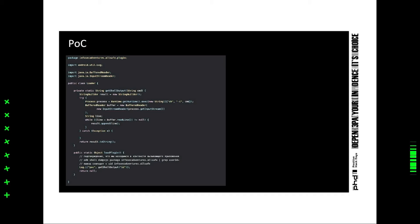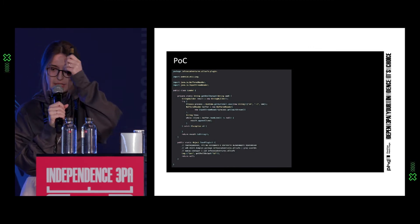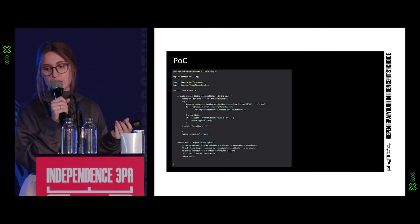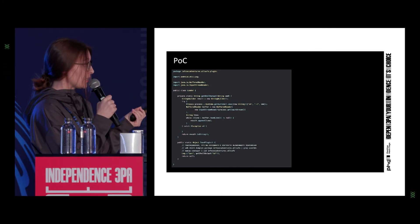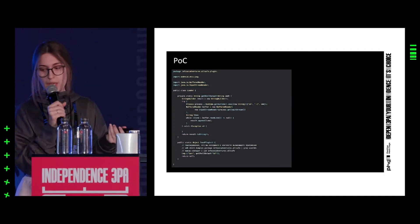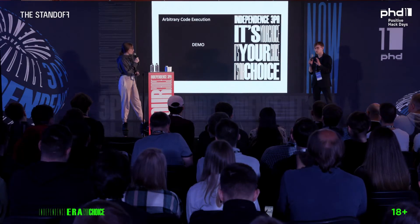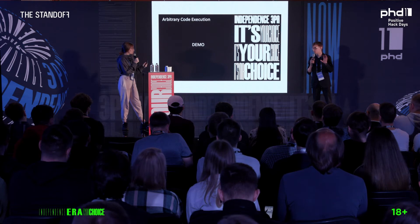We can see here actions with class loader that expects us to see the application and load the plugin method. Now we have the UID of our main application and the adversary's application, and this is how this exploit works.